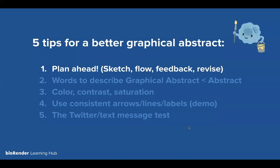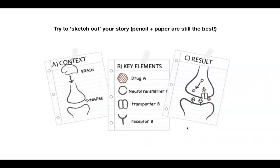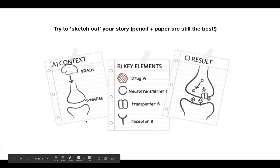First tip: plan ahead. We recommend pencil to paper — there's nothing better right now. Try to sketch out your story. Think about the main characters, the best supporting actors, what's a nice-to-have versus need-to-have, and whether it warrants a key or legend. Those things can be worked out in the sketch phase. It's really hard to work them out after you've started placing elements on your canvas.